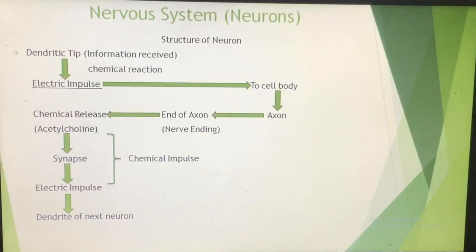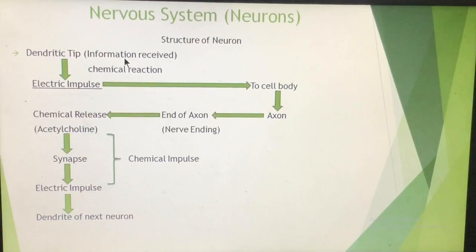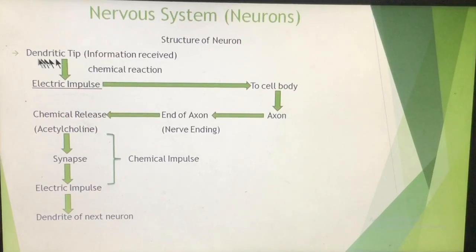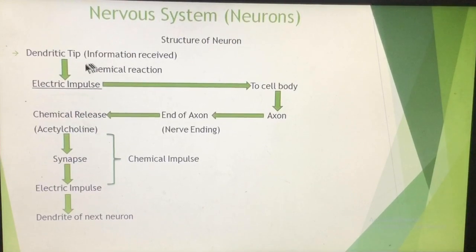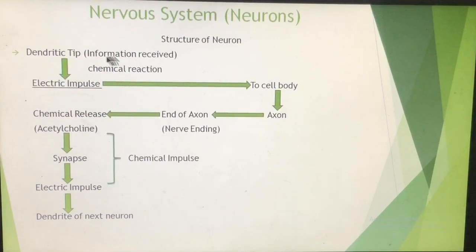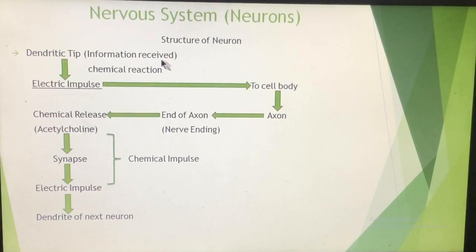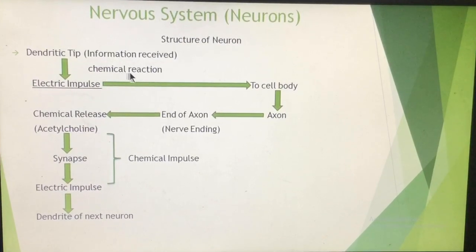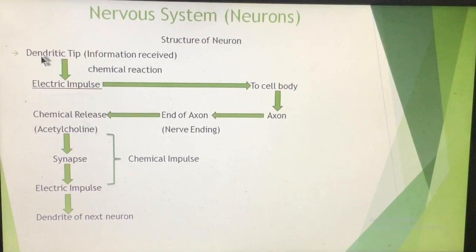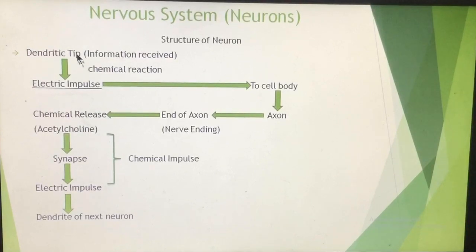Dendrites are small tree-like structures whose function is to receive information — any stimulus coming from outside is received by the dendritic tip. When it receives this information, certain chemical reactions take place, and because of those chemical reactions, the stimulus is converted into an electric impulse. This electric impulse from the dendrites then enters the main body of the neuron, which is known as the cell body.